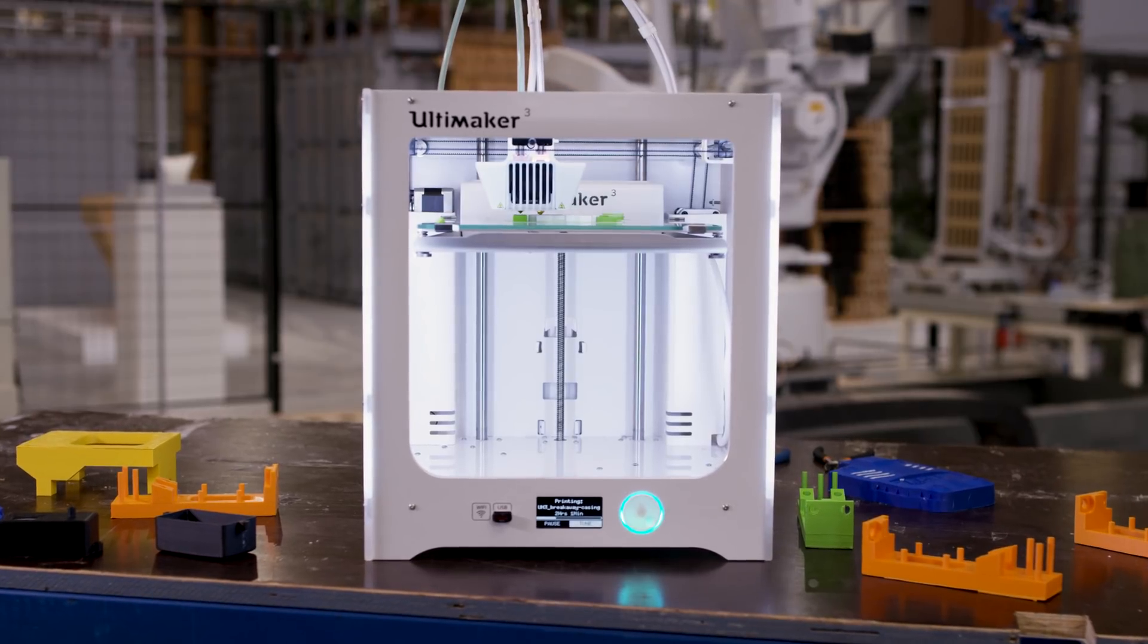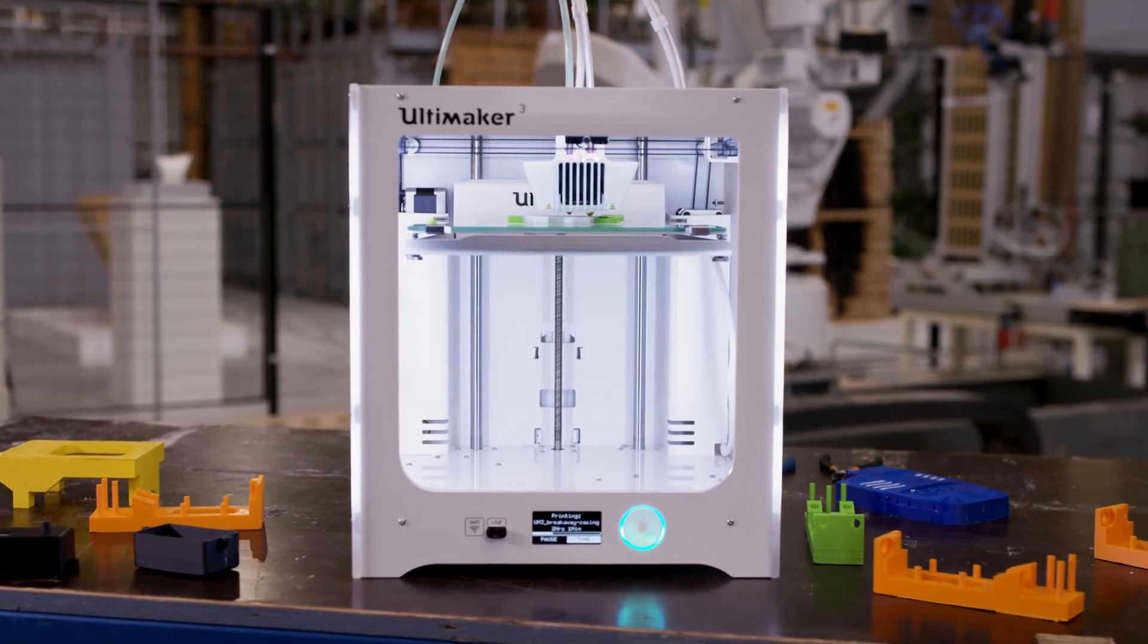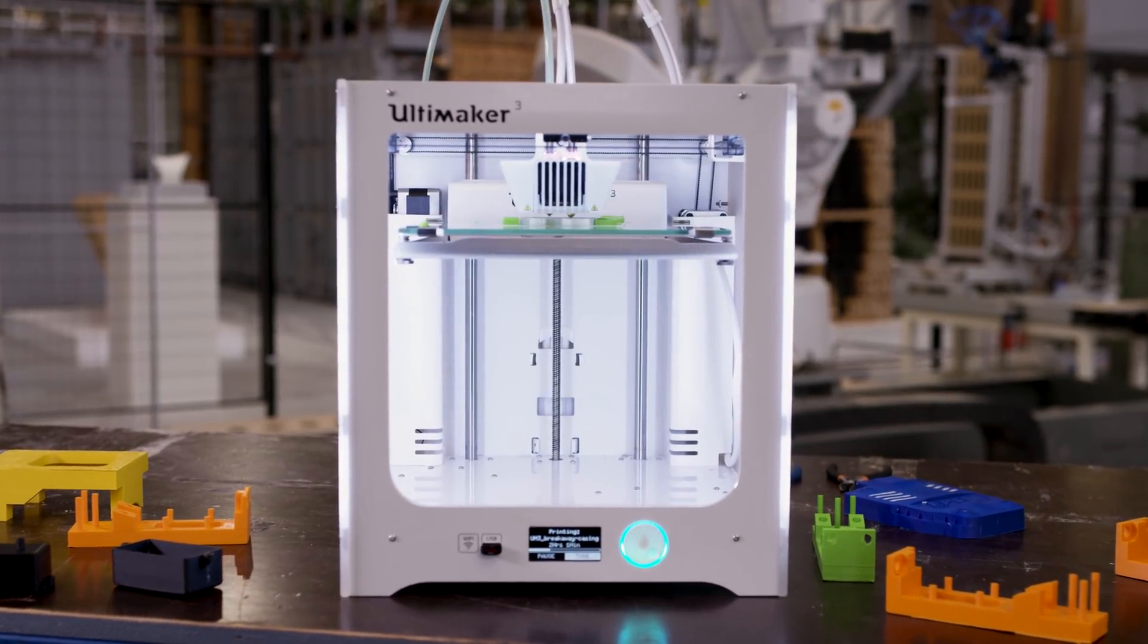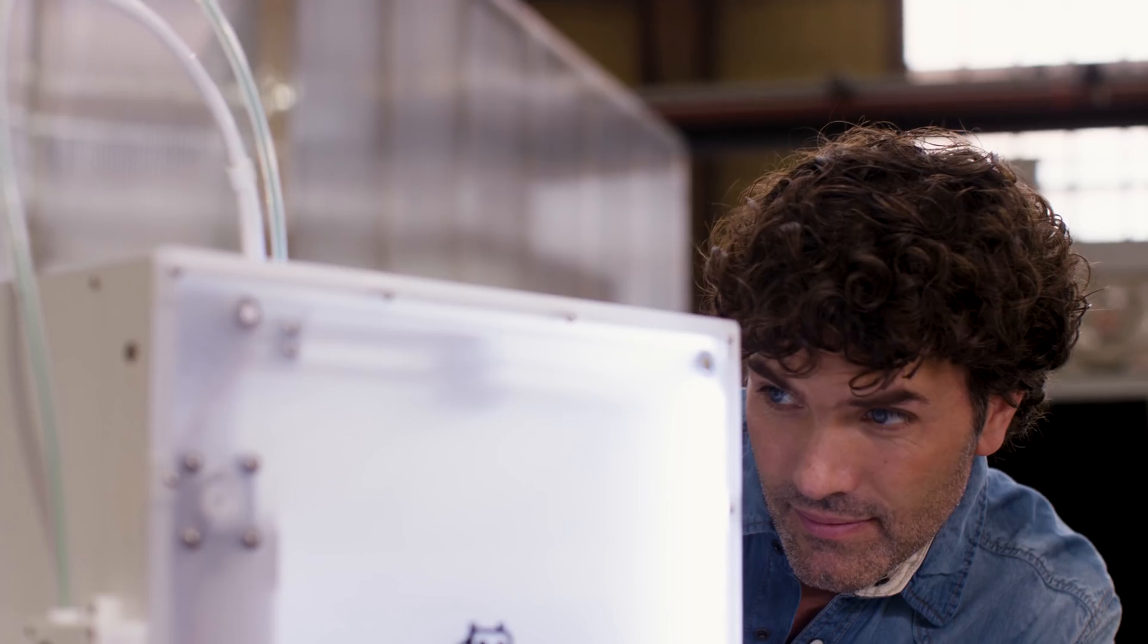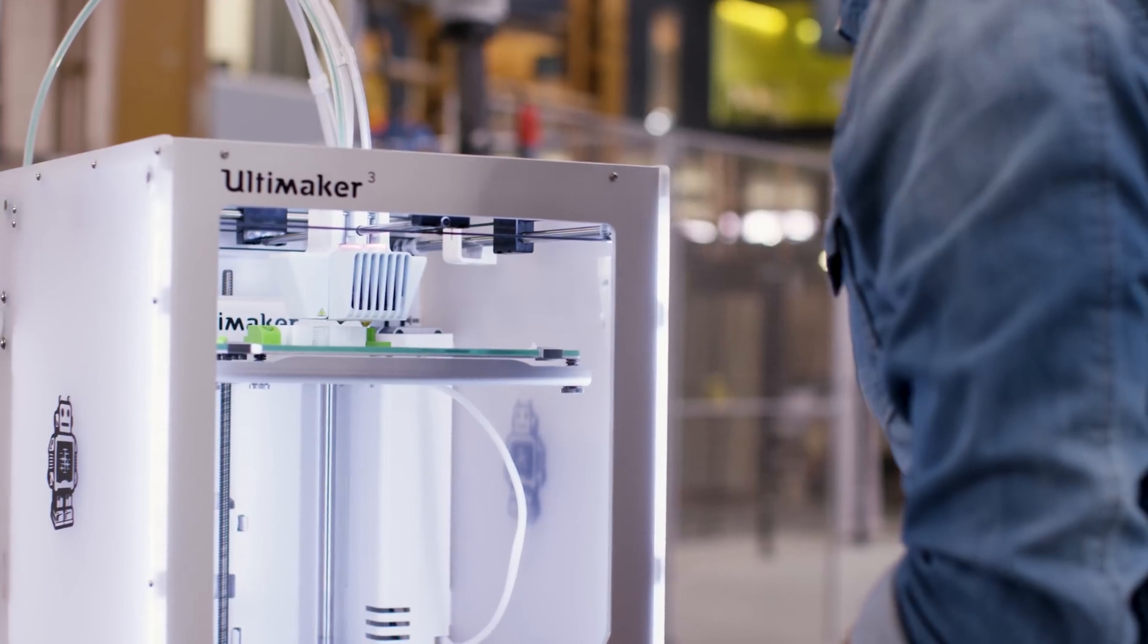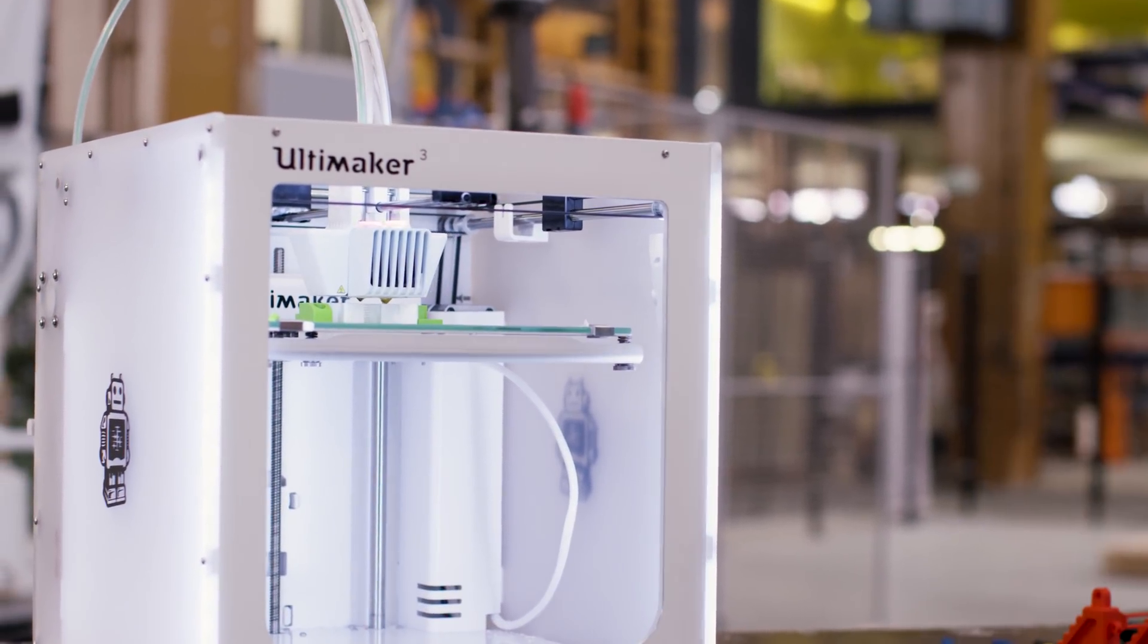This model is printed using Ultimaker Breakaway support material and ABS. Breakaway acts as a support material and can be easily removed in a matter of minutes while giving a high quality finish to your 3D print.